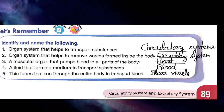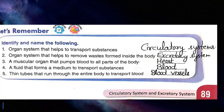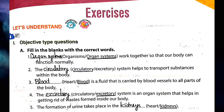Fifth one is: thin tubes that run through the entire body to transport blood. The correct answer is blood vessels. Blood vessels का meaning होता है thin tubes that carry blood within the body. Blood vessels में blood run करता है।